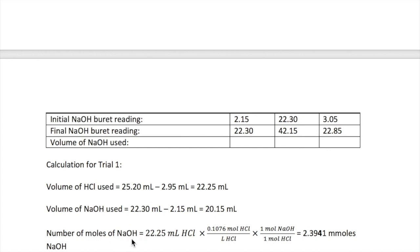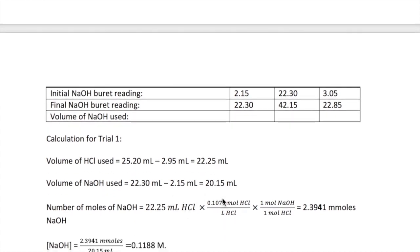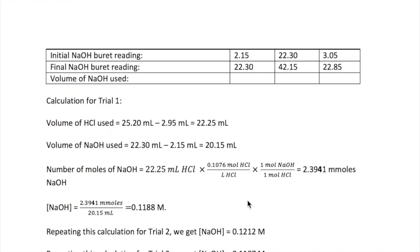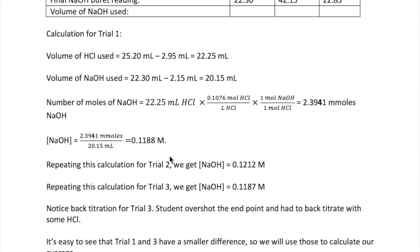We can calculate the number of moles of NaOH. We do this by getting the number of moles of HCl, which is done through multiplying the volume of HCl, 22.25 mL, by its concentration, which is 0.1076 molar. And then we do one step of stoichiometry between NaOH and HCl, and now we get the number of moles of NaOH as 2.3941 millimoles. Note that I'm rounding my answer at the end, but I'm keeping track here of my sig fig. Last step, I calculate my concentration of NaOH by taking the number of moles of the NaOH divided by its volume, giving me 0.1188 for NaOH in trial one.